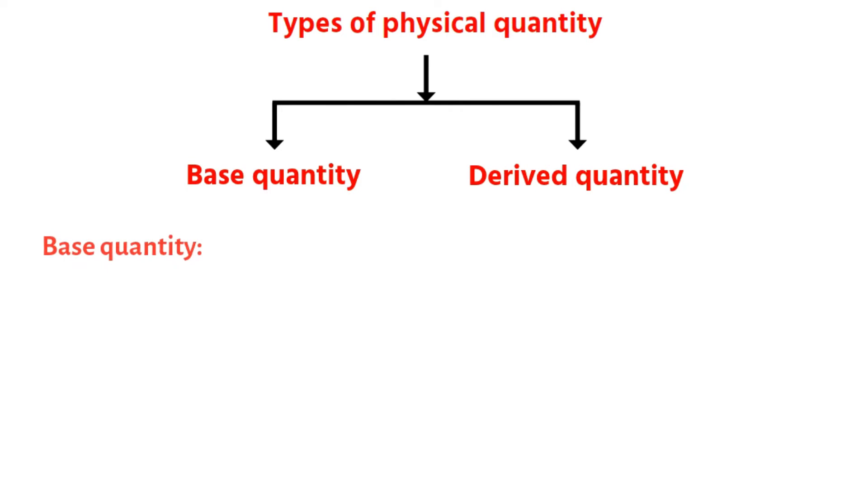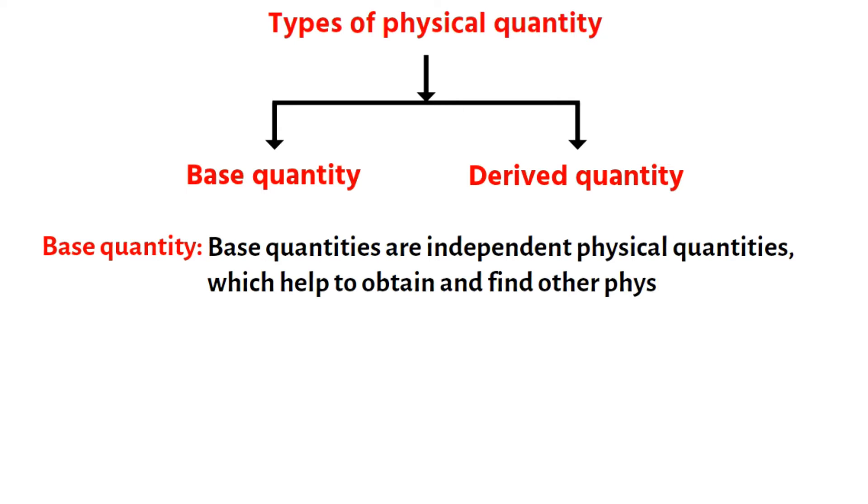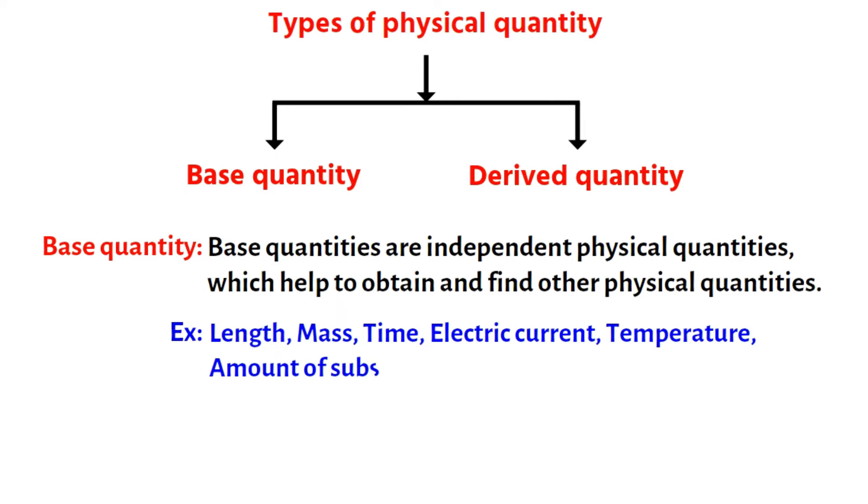Types of Physical Quantity. Physical quantities can be classified into two categories, base quantity and derived quantity. Base Quantities are independent physical quantities which help to obtain and find other physical quantities. Examples of such quantities are length, mass, time, electric current, temperature, amount of substance, and luminous intensity.